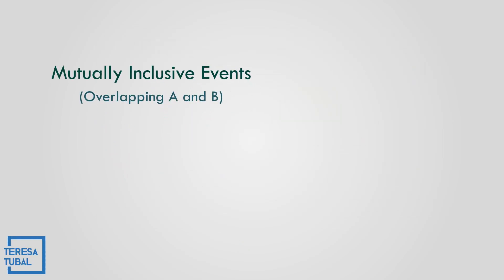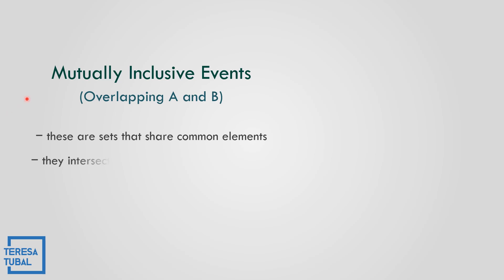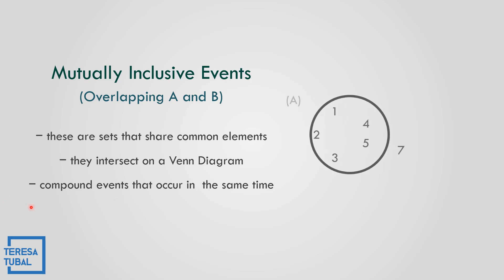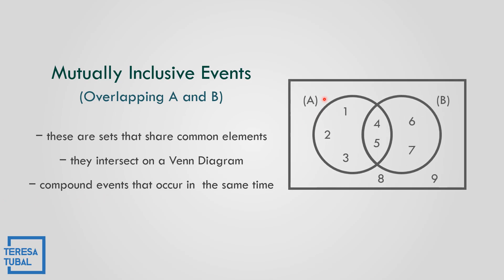Let us see what could be the mutually inclusive events — that is the overlapping of event A and event B. These are sets that share common elements. The mutually inclusive events intersect on a Venn diagram and are compound events that occur at the same time. As you can see, we have event A and event B, and event A is overlapped with event B — they intersect in an event diagram.